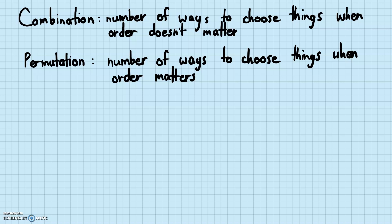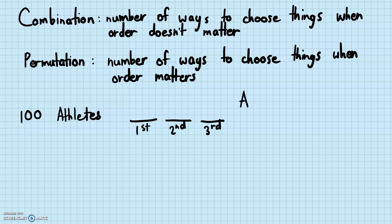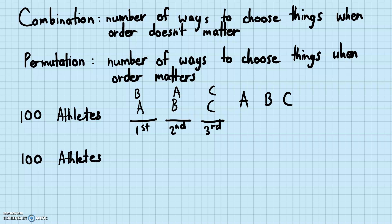Let's use the same example as with permutation. We have a group of 100 athletes, and the number of ways to choose first place, second place, and third place was by permutation because the order mattered. If I'm choosing three athletes A, B, and C, it's different if I put A-B-C versus B-A-C — even though I have the same three athletes, changing the order makes it a different choice. For a combination, the question would be: from 100 athletes, I'm just choosing three athletes — not assigning them first, second, or third place.